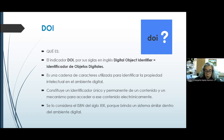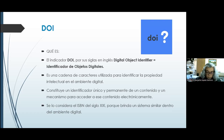Es así como surge el indicador conocido como DOI. ¿Y qué es el DOI? El indicador DOI, en sus siglas en inglés, Digital Object Identifier, en español, Identificador de Objetos Digitales. Es una cadena de caracteres utilizada para identificar la propiedad intelectual en el ambiente digital.